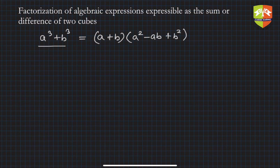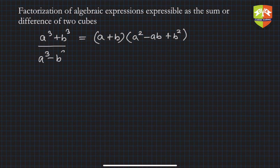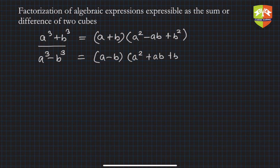You can always check the chapter on algebraic identities to understand that a³ + b³ = (a + b)(a² - ab + b²), and a³ - b³ can be expressed as (a - b)(a² + ab + b²).